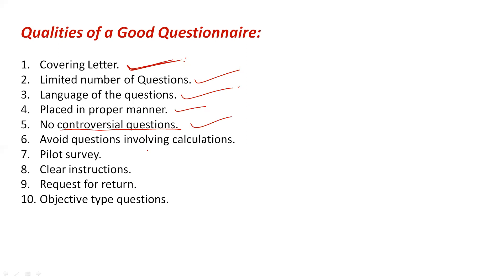The sixth quality is to avoid questions involving calculations. When people fill questionnaires at a mall or conference, nobody will have a calculator or the patience to do lengthy calculations. The questions should be simple; lengthy calculations make the questionnaire harder to complete, and the chances of it being ignored increase significantly.